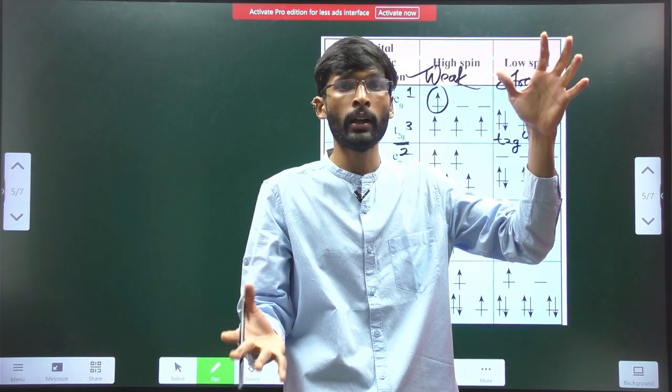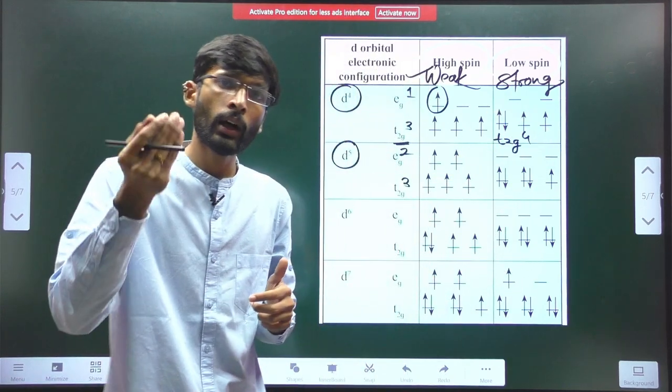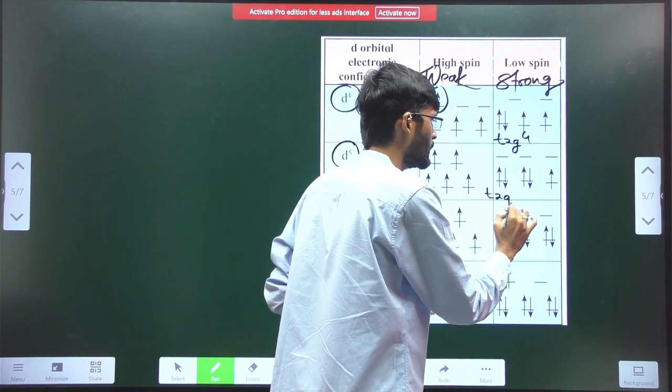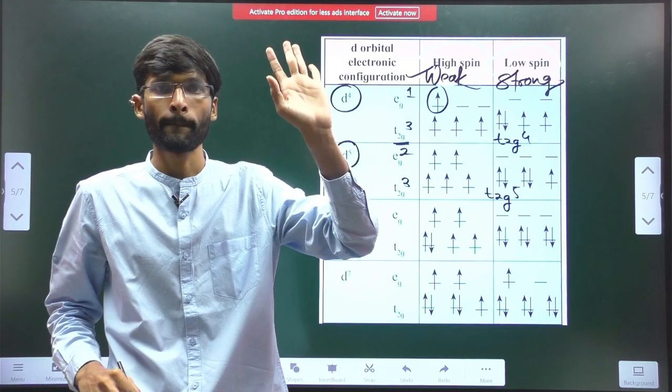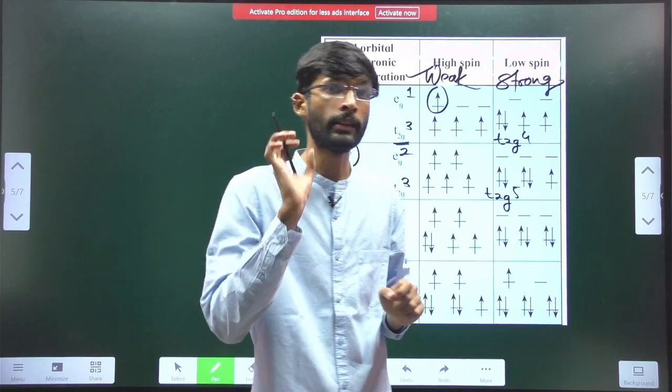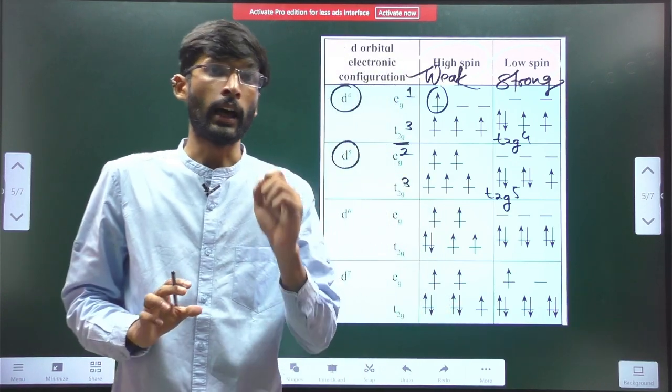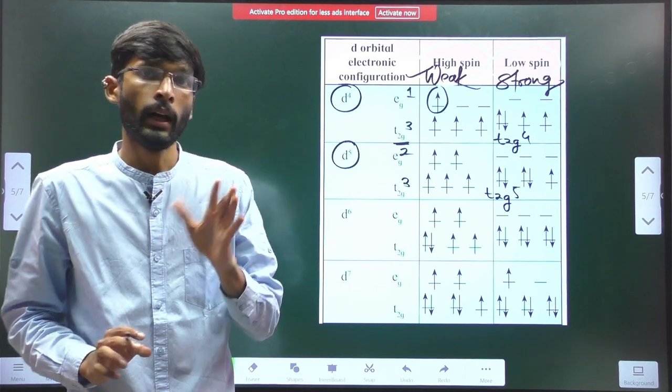For d5, again the fifth electron has two options: t2g or eg. With weak field, electron goes to eg, so configuration is t2g3 eg2. But with strong field, because gap is more, electron will go to t2g. Configuration becomes t2g5.